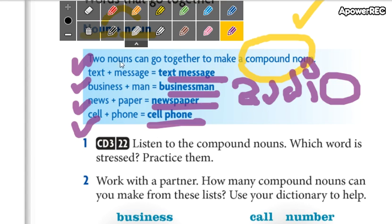You say that in the first word. So, you are going to read text message, businessman, newspaper, cell phone.